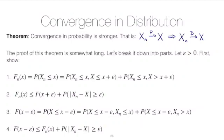In class we were going through a proof of a result that basically told us that convergence in probability is a stronger notion than convergence in distribution. What that means is that if you know that a sequence converges in probability to a random variable, then that implies that the sequence converges in distribution to that random variable.